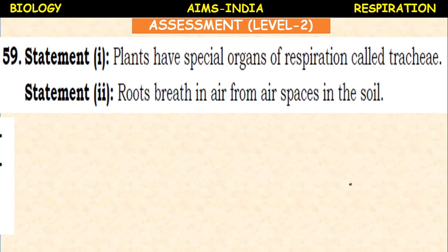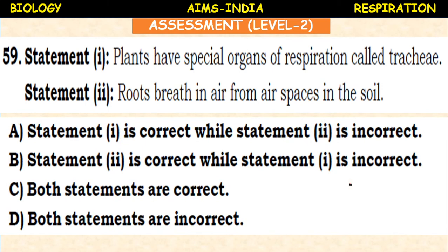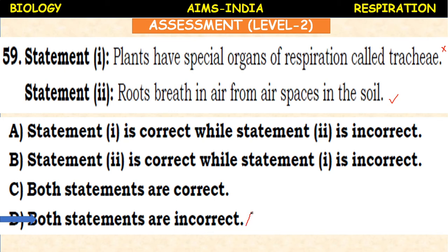Another statement-based question: Statement 1 — plants have special organs of respiration called trachea. Statement 2 — roots breathe in air from air spaces in the soil. Statement 1 is wrong; plants respire through stomata, lenticels, or root hairs. Statement 2 is correct — roots breathe in air from air spaces in the soil. Therefore, statement 2 is correct while statement 1 is incorrect.